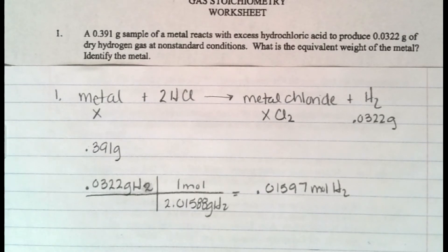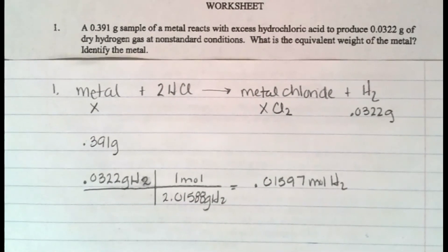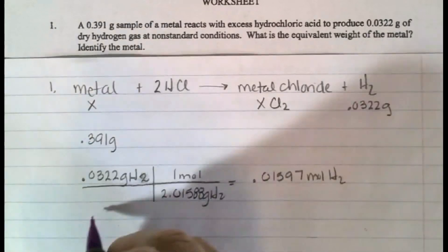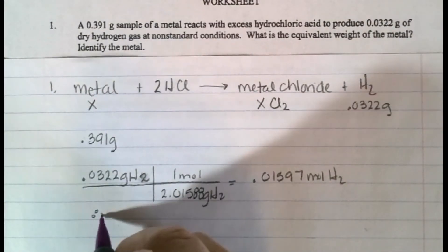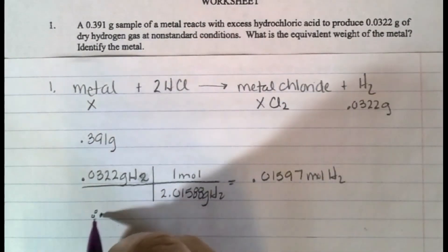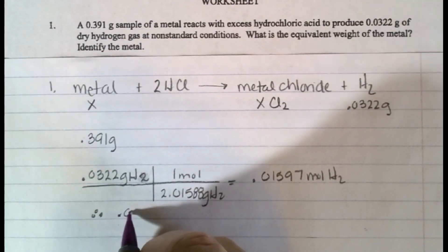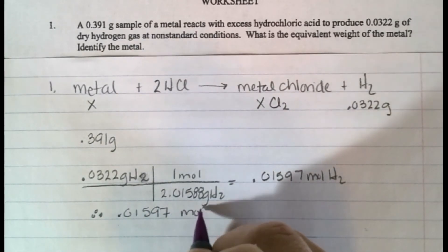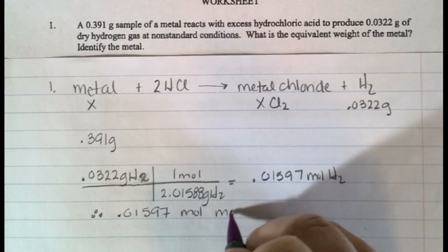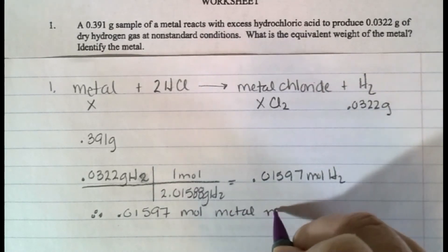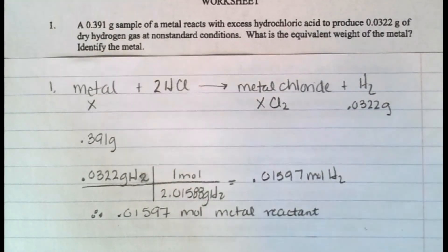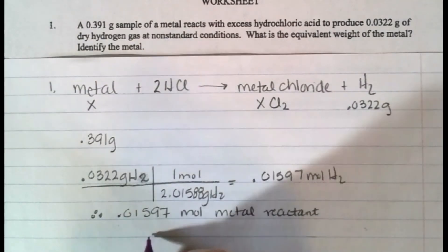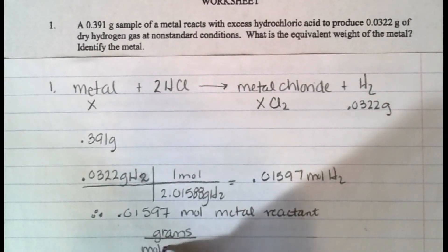But how does that help me? So I need to think a little bit more about this, and I have to remember that some of my basic chemistry, therefore, I have 0.01597 moles of metal reactant. Let me think. What do I know? Well, I know if I take the grams divided by the molar mass, I will get moles.